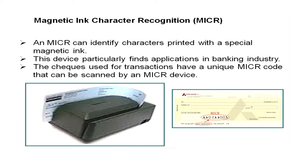An OCR is basically used to convert books, magazines, and other printed information into digital form. The next input device is the Magnetic Ink Character Recognition, commonly known as MICR — a device used to identify characters printed with a special magnetic ink. The common place where you must have seen this is the banker's check, which contains the MICR number below it. Whenever you deposit a check, this number is scanned by the device to verify the authenticity of the transaction.